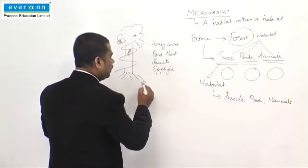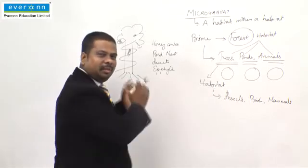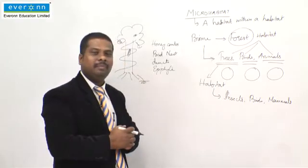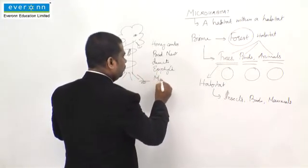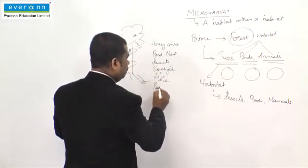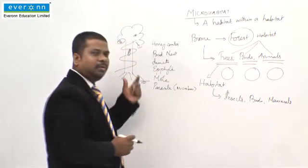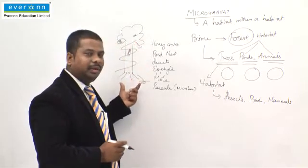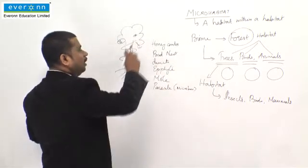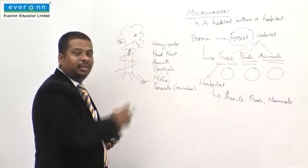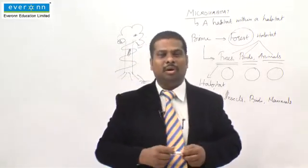You have small worms, or even a mole or a rabbit burrowing near the base. That makes a life around the tree, and there are numerous parasites too. Now you have seen how a single tree has become the habitat for so many organisms. But look at the more important point — none of them are disturbing the life of others. So a habitat within a habitat is what you call a microhabitat.